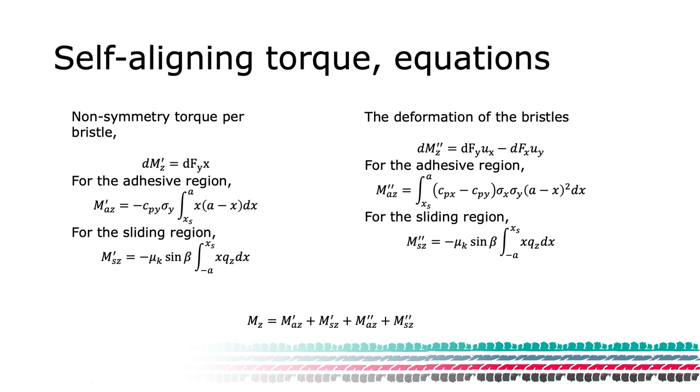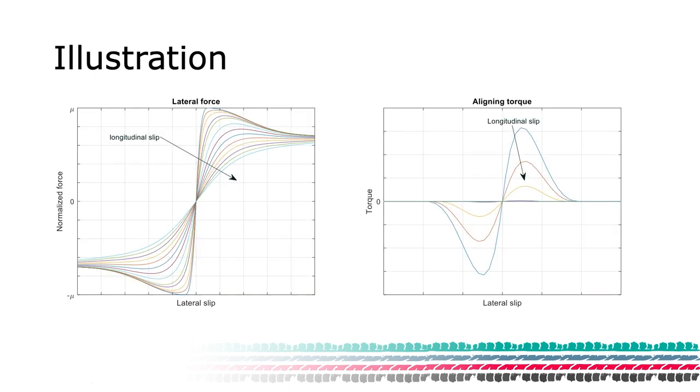Finally, the total aligning torque is given by the two phenomena in the adhesive and sliding parts. To the left we can see an example of curves generated from the lateral force when we have a longitudinal slip present.